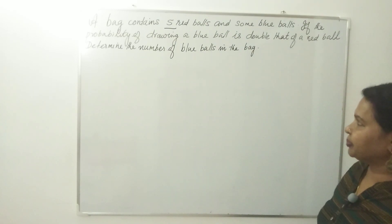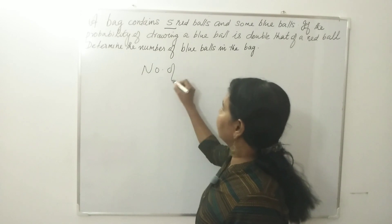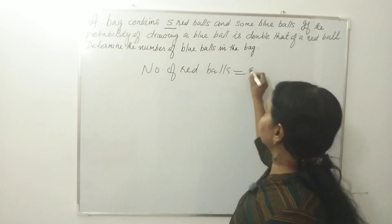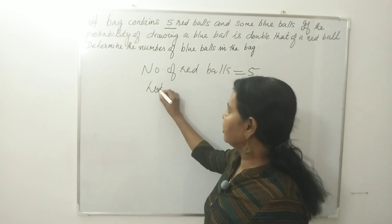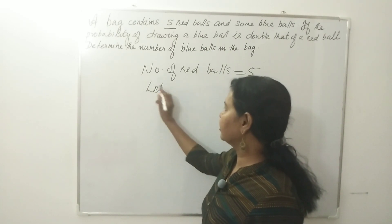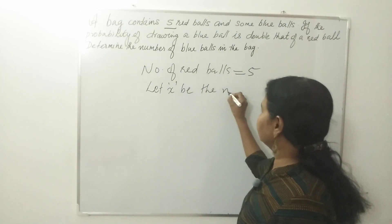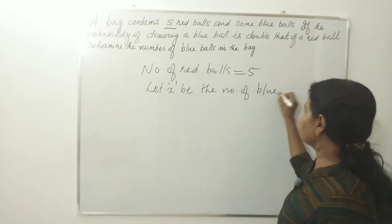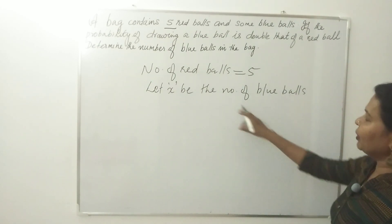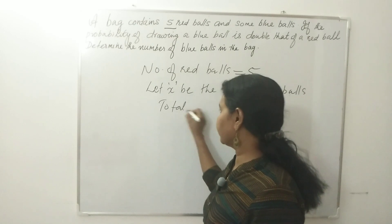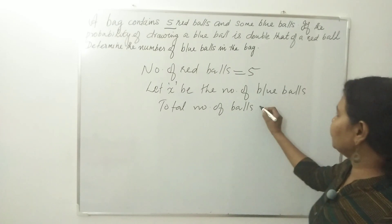We need statements. First, number of red balls is 5. Let X be the number of blue balls. So the total number of balls is 5 plus X.